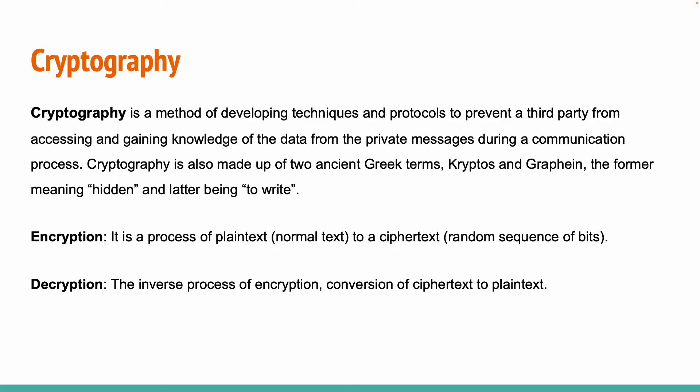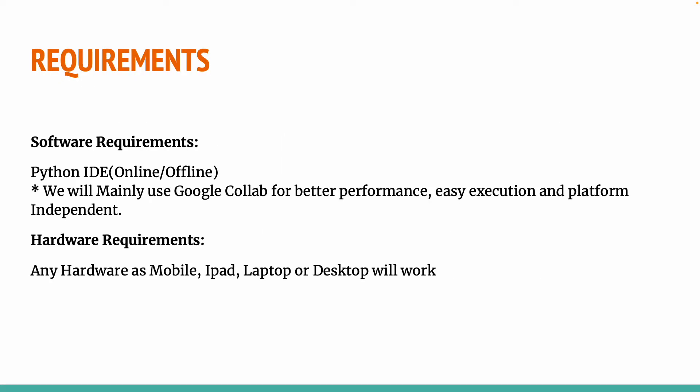Cryptography involves two processes. The first is encryption and the second is decryption. Encryption is the process of hiding a message by converting your plain text into cipher text. Decryption is the reverse process of encryption — in decryption, you read back the message that was in cipher text, which was previously not understandable.